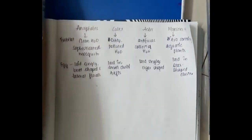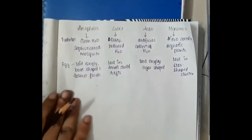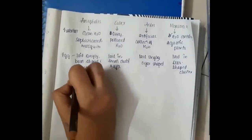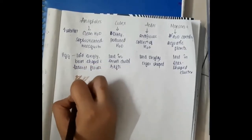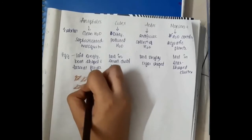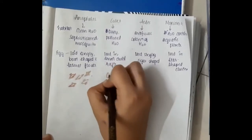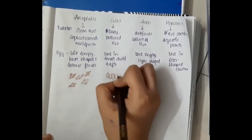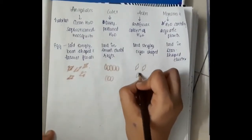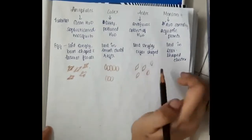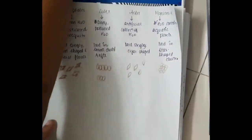In Anopheles mosquito, you can see the eggs which are laid in floats — they are arranged singly and are boat-shaped with lateral floats. In Culex mosquito, the eggs are laid in small clusters or rafts. In Aedes mosquito, the eggs are laid singly and they are cigar-shaped. In Mansonia mosquito, the eggs are star-shaped and they are laid in clusters.